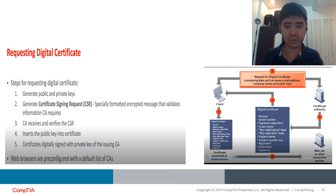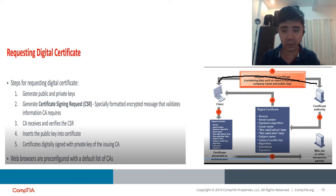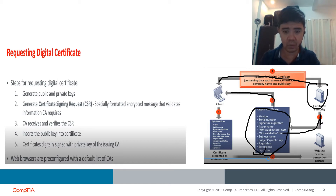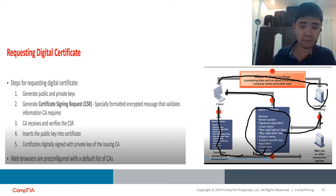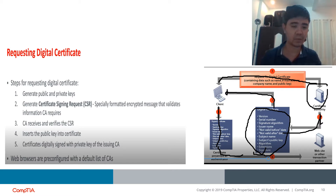If a client requests a digital certificate, it is sent to the Certificate Authority. After processing, the CA issues a digital certificate containing the contents we discussed. This certificate is sent to the requestor. Every time there is a transaction with a partner, the digital certificate is forwarded along with the transaction.